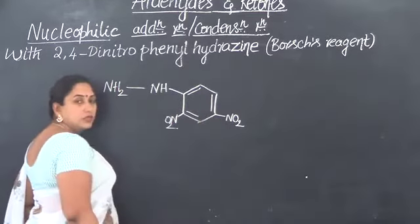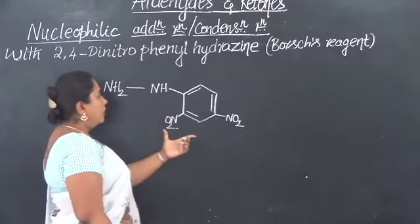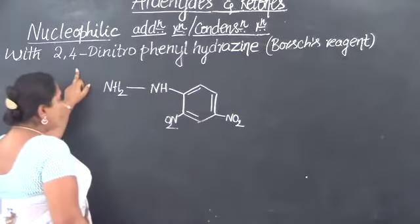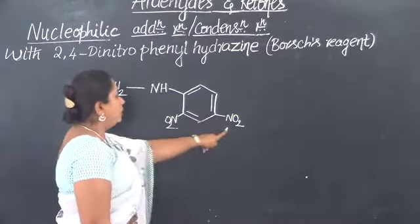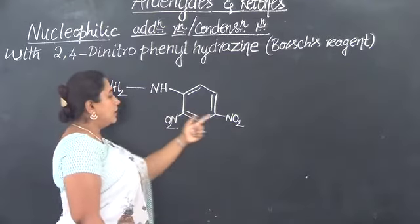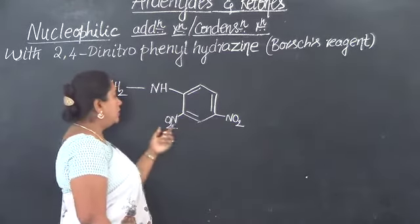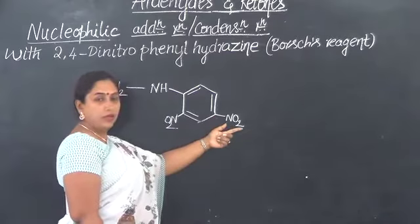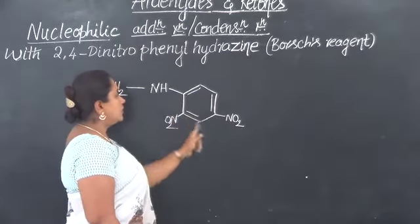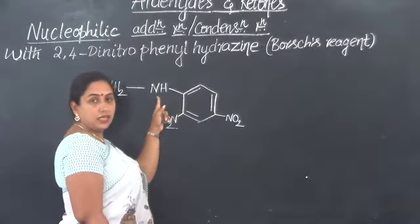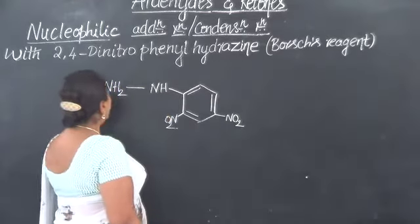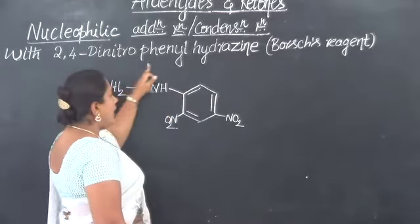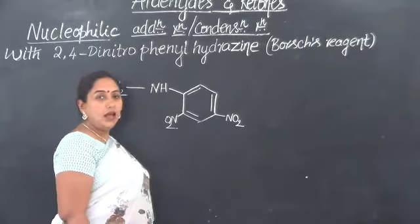Therefore, this compound is named as 2,4. You see the second carbon atom and the fourth carbon atom, two nitro groups linked. Otherwise, the structure will be phenylhydrazine structure. Therefore, it is called 2,4-dinitrophenylhydrazine.